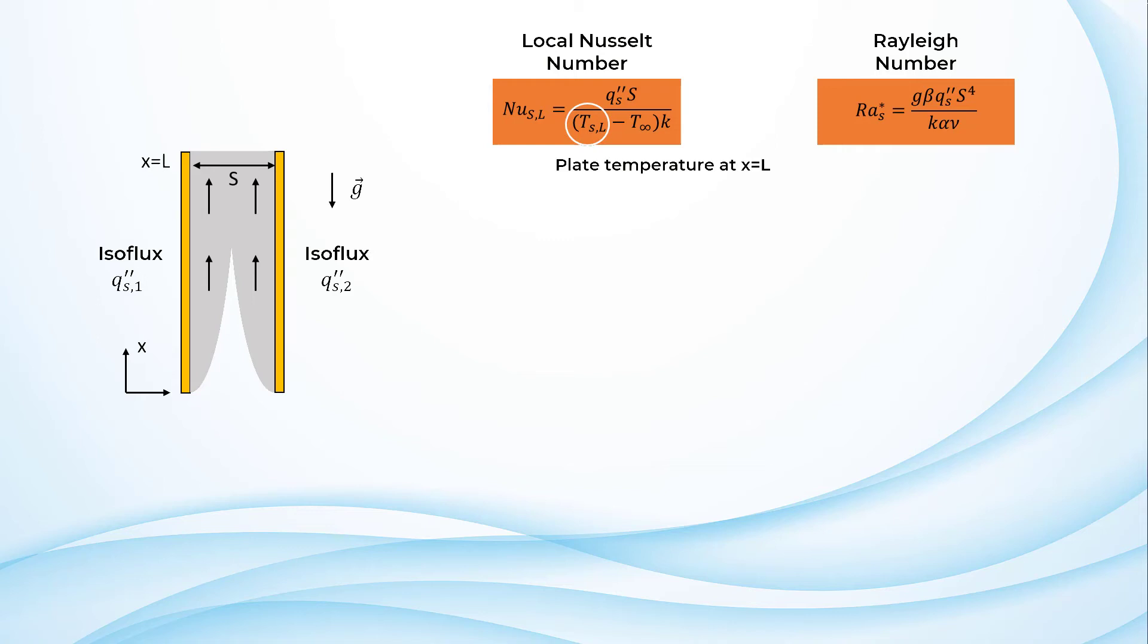A similar limit is obtained for an asymmetric heating condition with one surface at constant heat flux condition, Qs1, and the other at adiabatic condition, i.e., Qs2 is equal to 0.